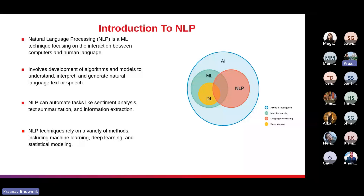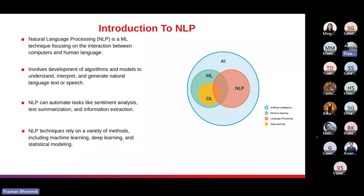Let's move ahead to introduction to NLP. NLP is a branch of AI and ML that focuses on interaction between computers and human language. It involves development of algorithms, systems, and models to understand, interpret, and generate natural language. NLP enables machines to analyze and derive meaning from unstructured textual data such as emails, social media posts, articles, or customer reviews. By processing this data, NLP can automate tasks like sentiment analysis, text summarization, and information extraction.